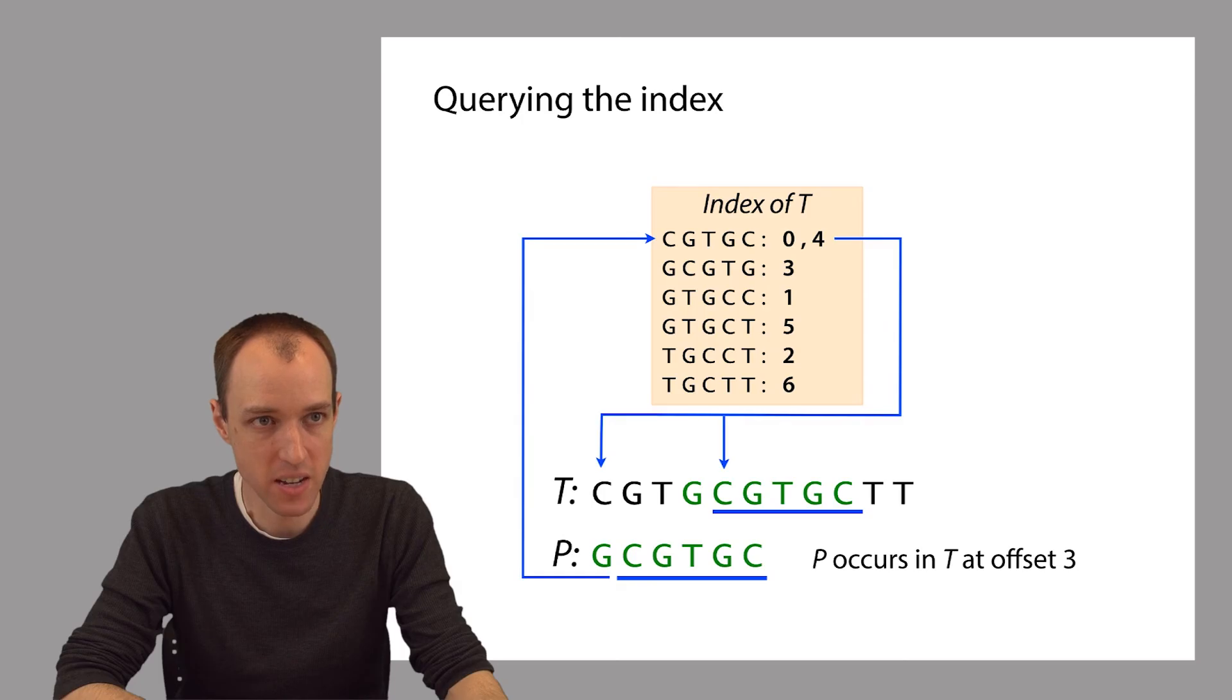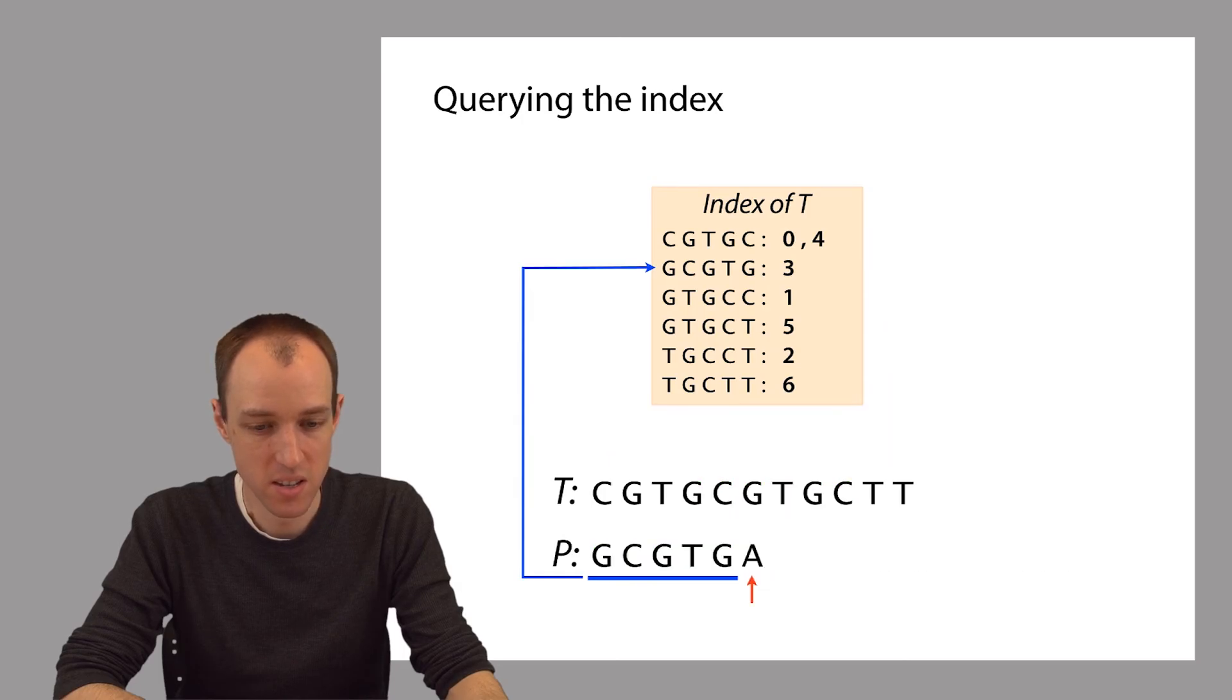Here's a modified example. This is just like the previous example, except that we made a substitution within P. This last base here is now an A. So P no longer matches within T because of this change that we made. But let's go through our procedure anyway.